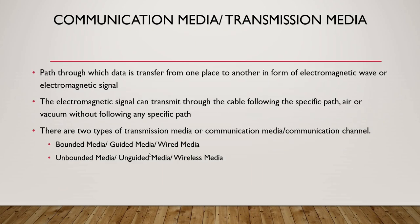Communication media, or transmission media, is the path through which data is transferred from one place to another in the form of electromagnetic waves or electromagnetic signals. Electromagnetic signals are transmitted through cable, whereas waves are used through the air. There are two types: bounded media (guided or wired media) and unbounded media (unguided or wireless media).